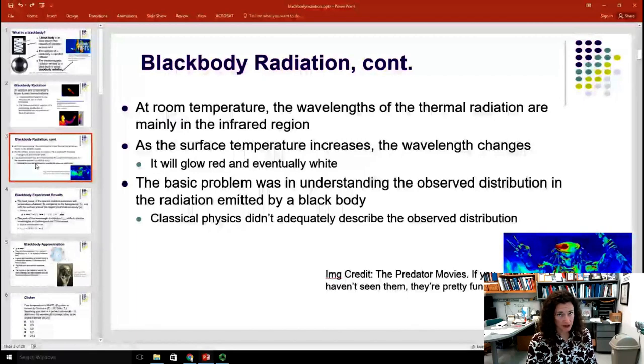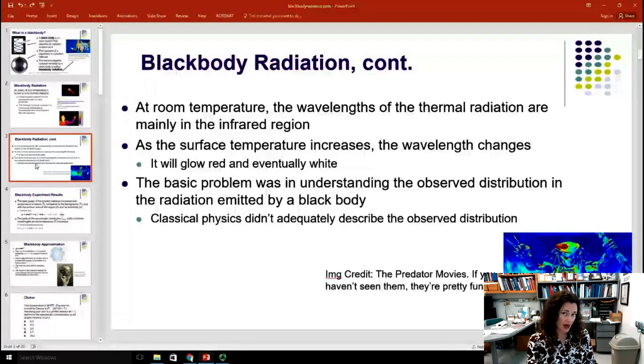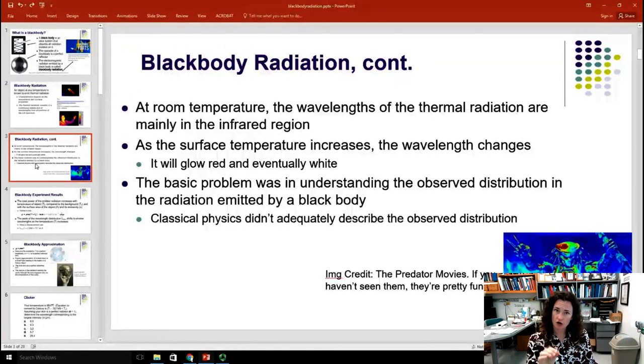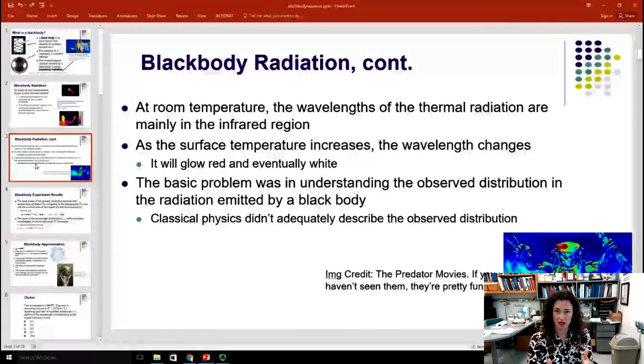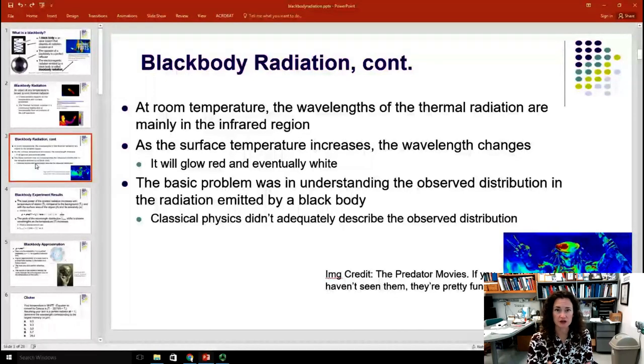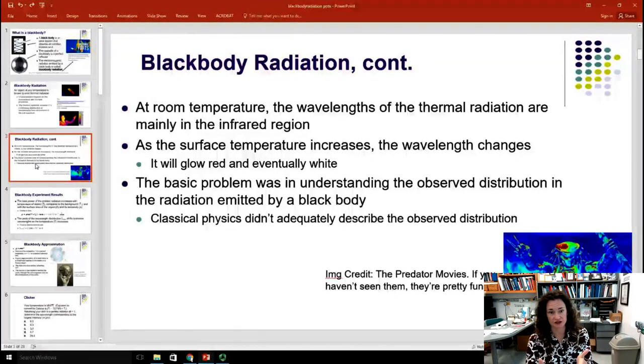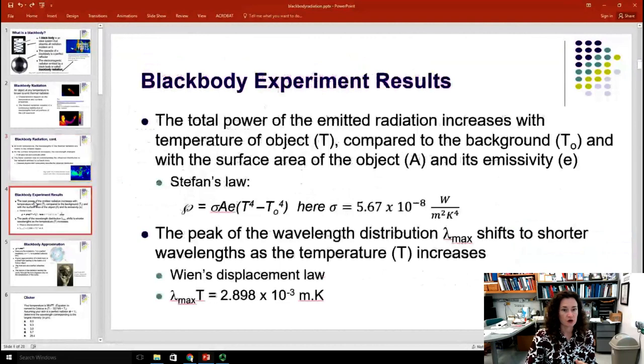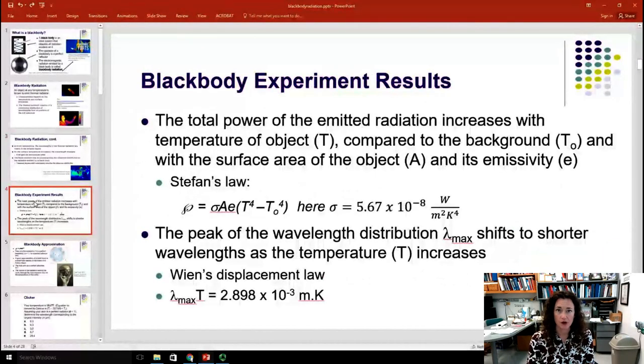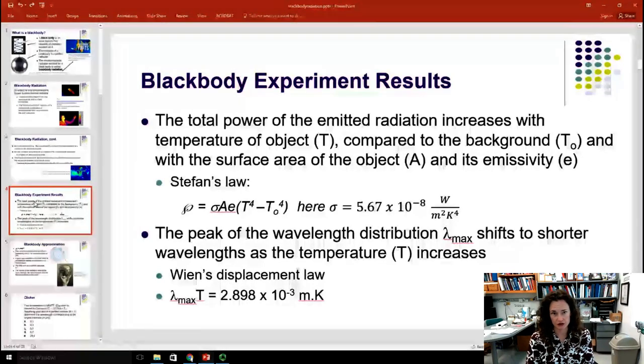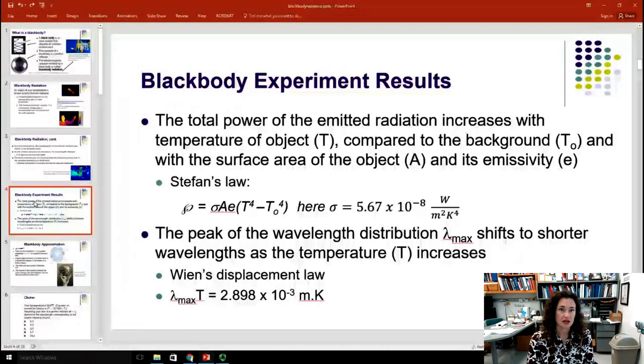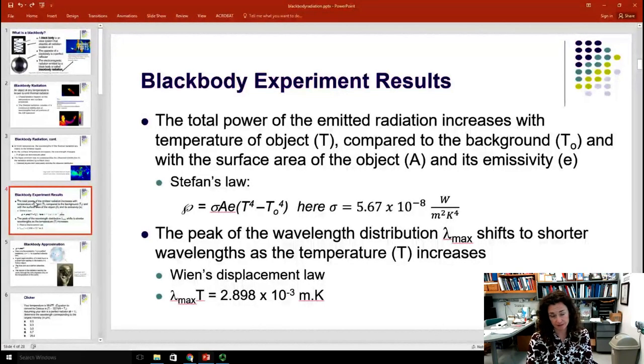The basic problem that scientists in the 1800s had with understanding black body radiation was in describing and fitting the curve that came off of the black body radiator. They couldn't fit it based upon the physics that they understood at the time. So there were a couple of laws that people were able to extract even without fitting the curves about black body radiators. So first was Stefan's law.